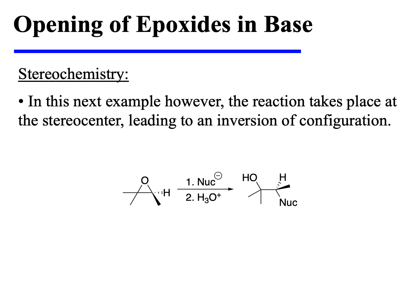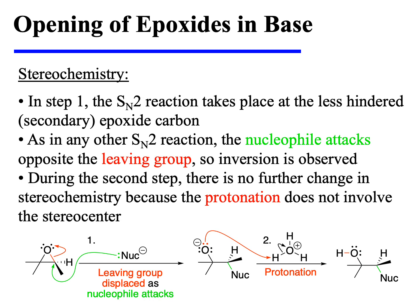However, in this next example, the reaction takes place at the stereocenter, leading to an inversion of configuration. In step one, the SN2-like process occurs at the less sterically hindered epoxide carbon, which in this case is the secondary carbon — a site that is preferable for attack when compared with the alternate tertiary center. As in any other SN2 reaction, the nucleophile attacks opposite the leaving group, so inversion is observed. During the second step of the reaction, there is no further change in stereochemistry because protonation does not involve the stereocenter.